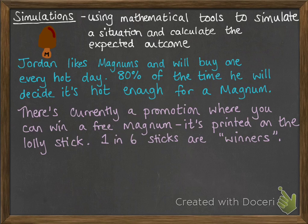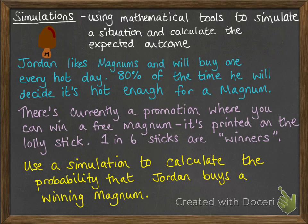There's currently a promotion where you can win a free magnum, and it's printed on the lolly stick — the kind where it tells you if you're a winner after you've eaten the ice cream. One in six of the sticks are winning sticks with winners printed on them. We want to simulate this situation so that we can calculate the probability that Jordan buys a winning magnum on any given day.